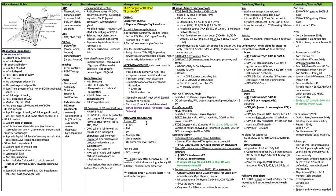Adjuvant treatment after surgery: post-op radiation indications include pT3 or T4, perineural invasion, lymphovascular invasion, multiple positive lymph nodes, close margins, or an oral cavity primary with levels 4 and 5 lymph nodes involved. Post-op indications for chemoradiation would be extracapsular extension and positive margins.